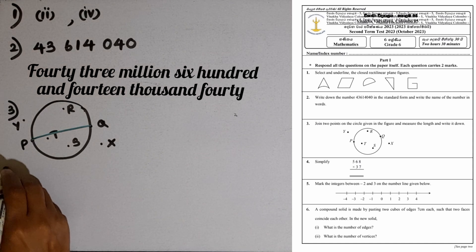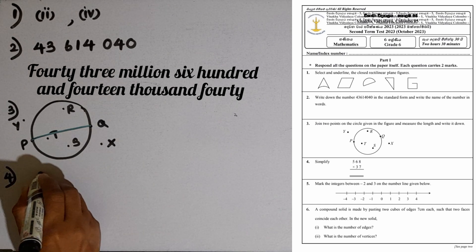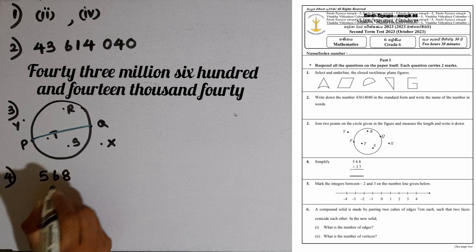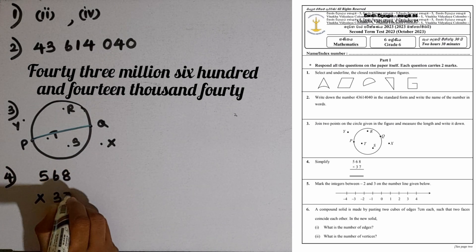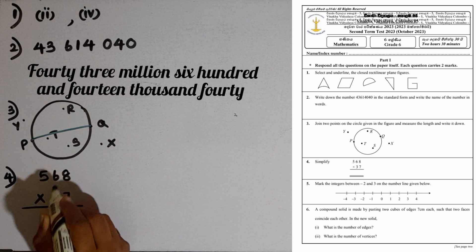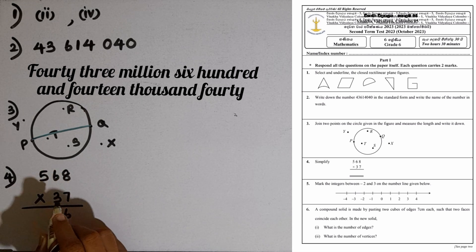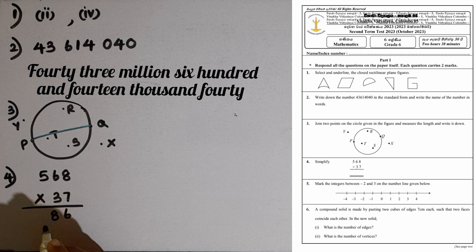Question number four: Simplify 568 multiplied by 37. We have to multiply by each digit. 7 times 8 is 56, remaining is 5. 7 times 6 is 42, 42 plus 5 is 47, remaining is 4. 7 times 5 is 35, 35 plus 4 is 39.